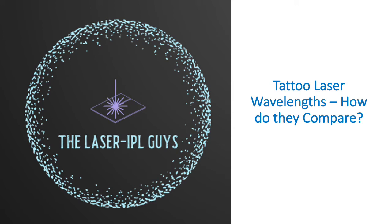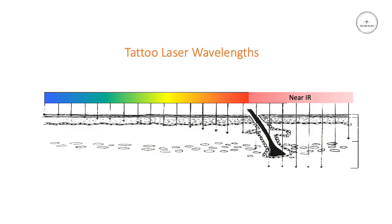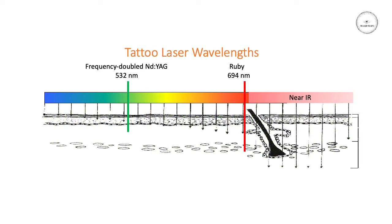Today I'm going to talk about the laser wavelengths we typically use to treat tattoos and how they compare. There are four main wavelengths that we generally use these days. The 532 is the frequency doubled Nd:YAG laser and it's a green beam. The Ruby laser gives us 694nm, which is a deep red color. The Alexandrite gives us 755 nanometers, which is just beginning to encroach into the near-infrared part of the spectrum, so is invisible to most people.